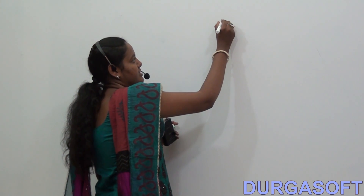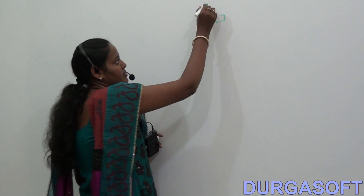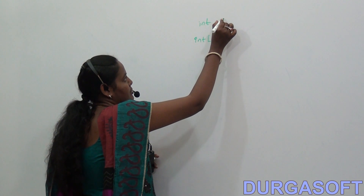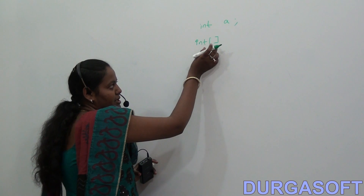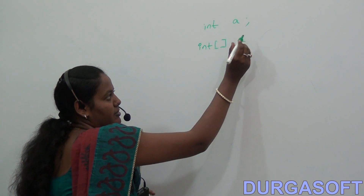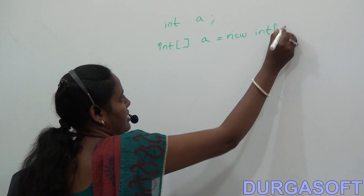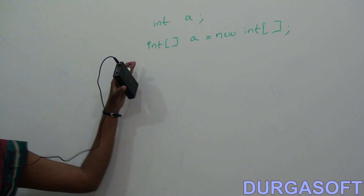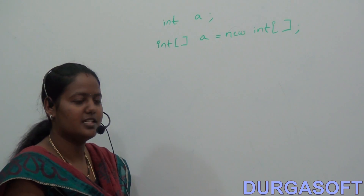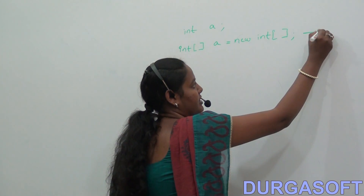Initialization of an array: how do we initialize an array? It is similar to variable initialization. For a variable, you mention the data type and variable name. For an array, you mention the data type, then the size, then the array name, followed by 'new data type'. If you leave it without mentioning the size, this is called a dynamic array.